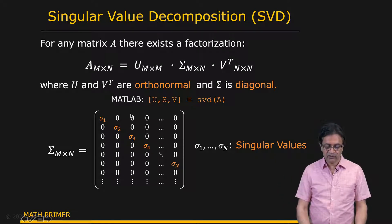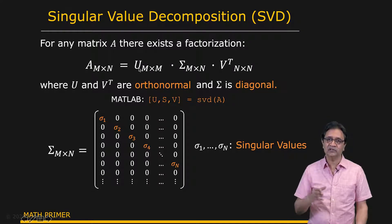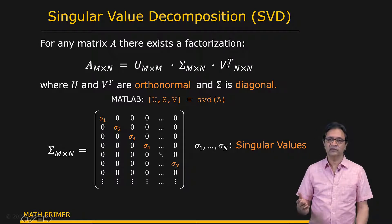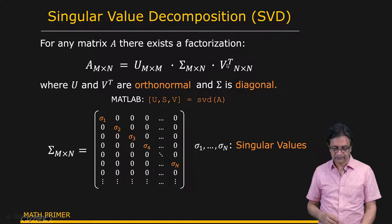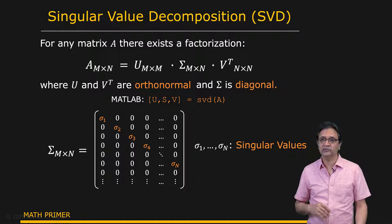The columns of U are often referred to as the left singular vectors of the matrix A. That is singular value decomposition.